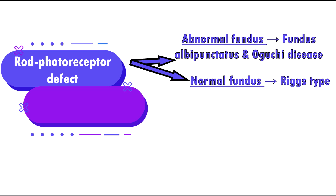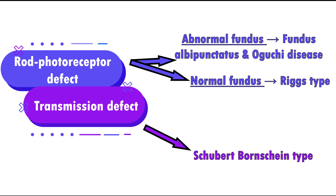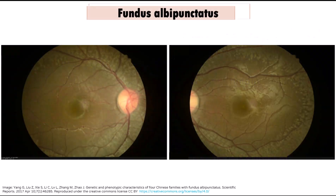The second type is due to a transmission defect from photoreceptor to bipolar cells and is called the Schubert-Bornschein type. First, we will talk about fundus albipunctatus.